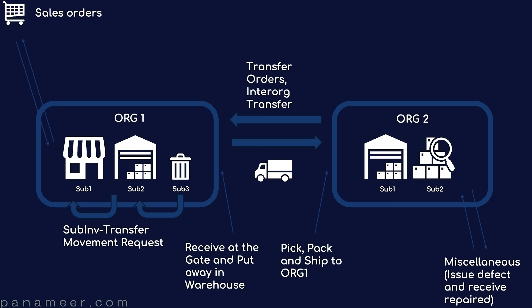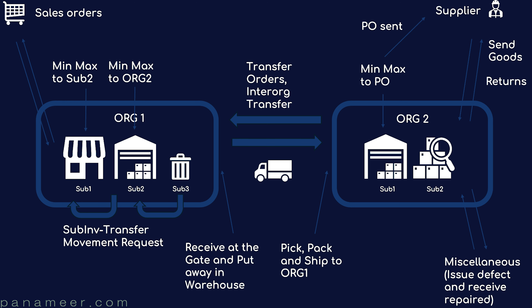The fourth group covers all kinds of miscellaneous, smaller transactions, like issuing defective items out of our inventory. And the fifth and final group are replenishment transactions — all kinds of min-max planning transactions so that we never run out of stock and can adjust our on-hand inventory quantity.